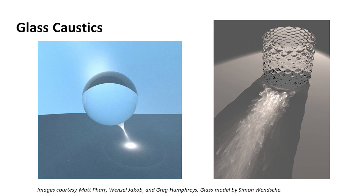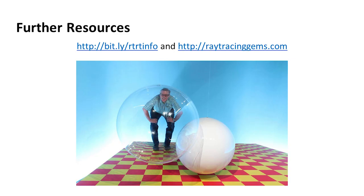These are two shots from the physically-based renderer by Matt Farr and others, giving gorgeous effects of light refracting through glass and similar surfaces. For further resources, see the link for all kinds of free books. One free book in particular I'd like to point out is Ray Tracing Gems — a modern book about ray tracing theory and practice — and it's free to download.